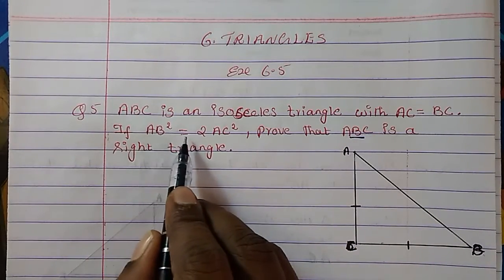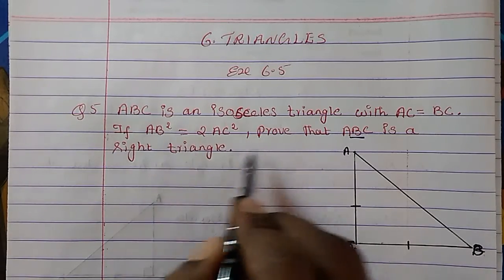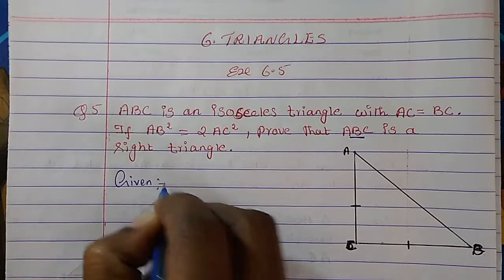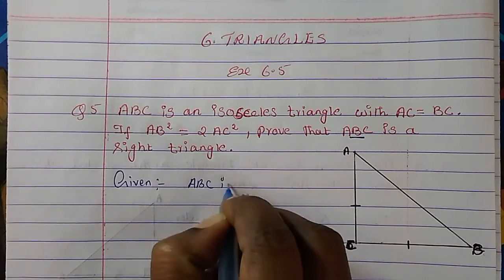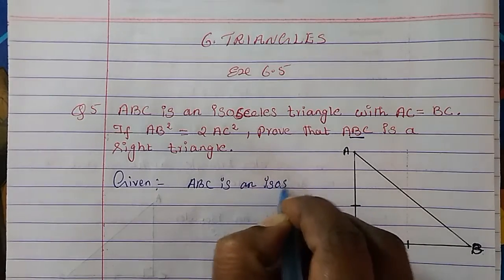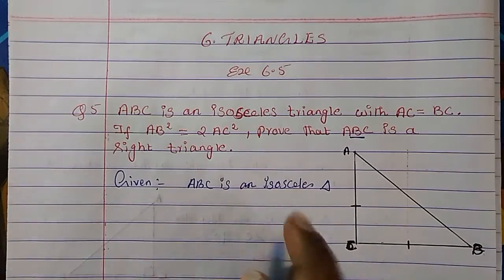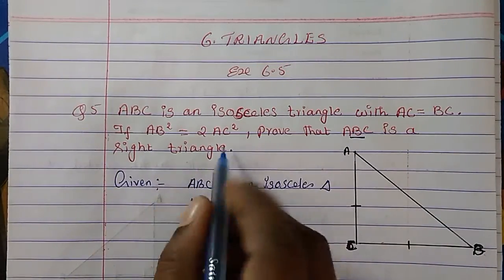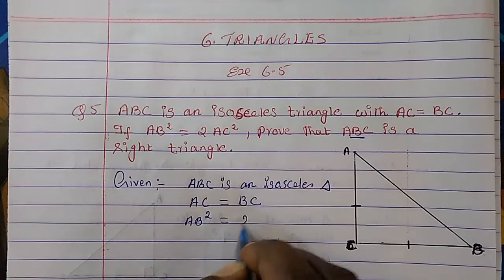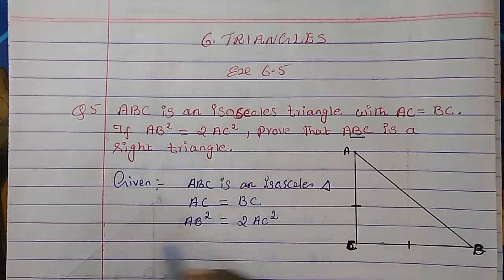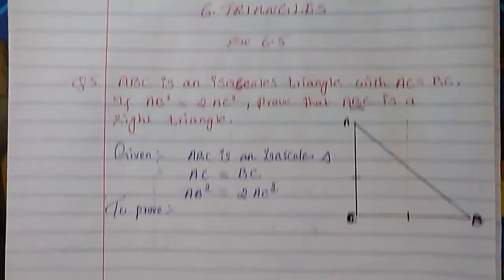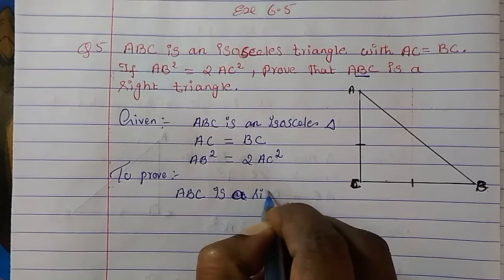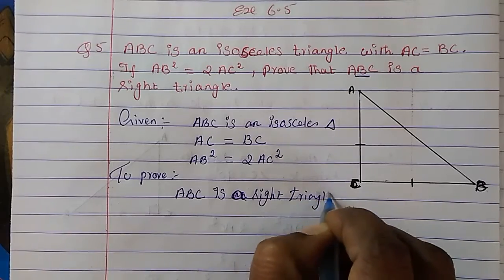It is also given that AB square is equal to 2 times AC square. We have to prove that ABC is a right triangle. So let us write down what is given: ABC is an isosceles triangle, AC is equal to BC, and AB square is equal to 2 times AC square. To prove: ABC is a right triangle.